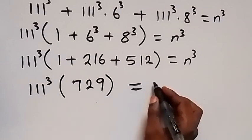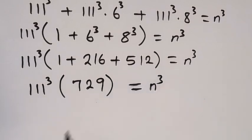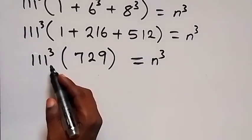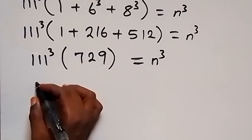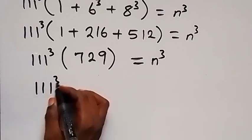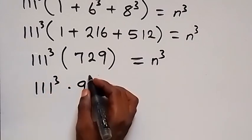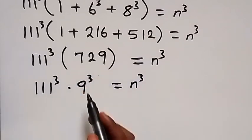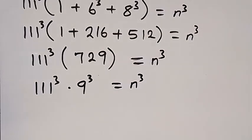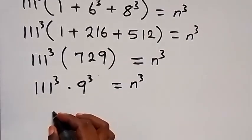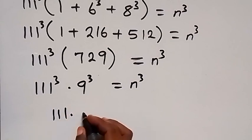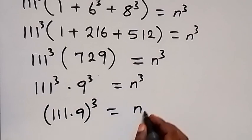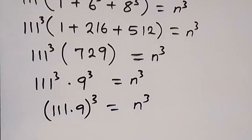We can also express 729 as a power of 3 — that is 9 raised to power 3. So we have 111 raised to power 3 times 9 raised to power 3 equals n raised to power 3. We can bring this together as 111 times 9, all raised to power 3, equals n raised to power 3.